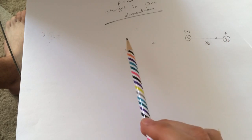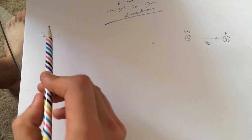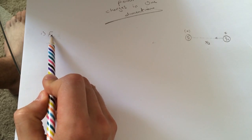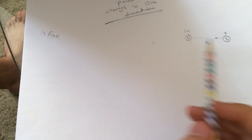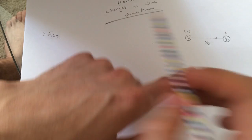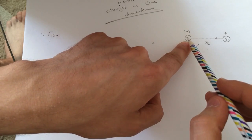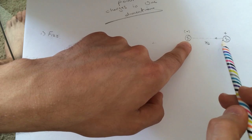There is the distance between them. The first question is asking they want to know the force that charge 1 exerts on charge 2. So since they want 1 on 2, make charge 1 stand still and this guy can move.